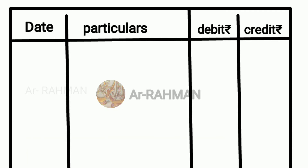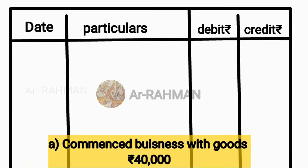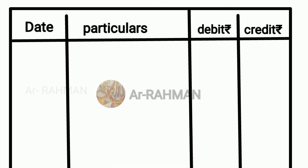First question: commenced the business with goods Rs.40,000. So for Rs.40,000 business start — actually goods start. 'Commenced' means started. So these are two important words: business and goods. When business is started with goods and cash, that is capital. The first time to introduce the business is capital.